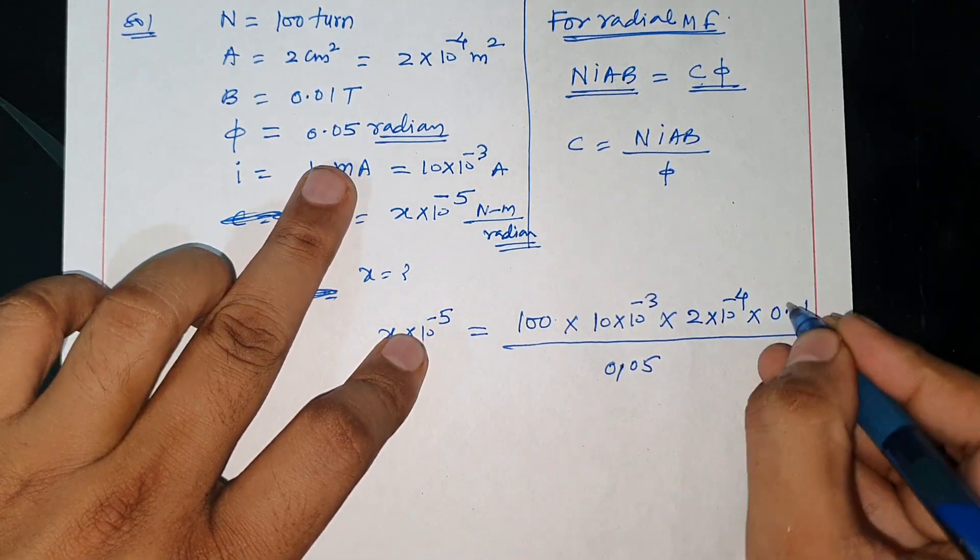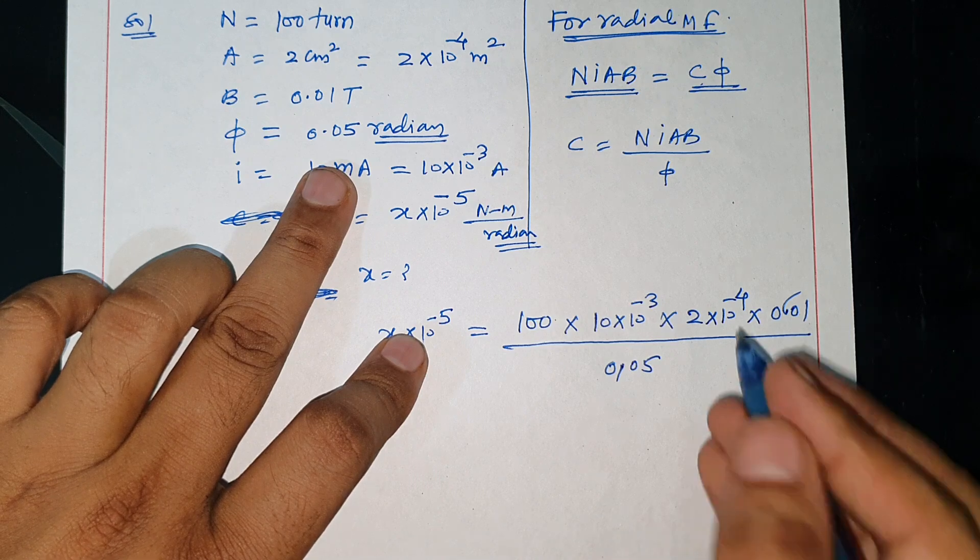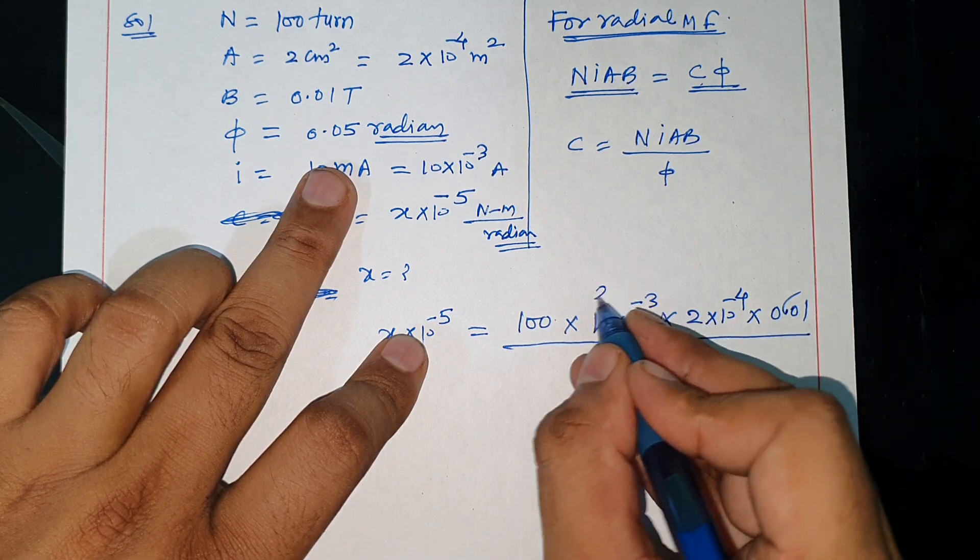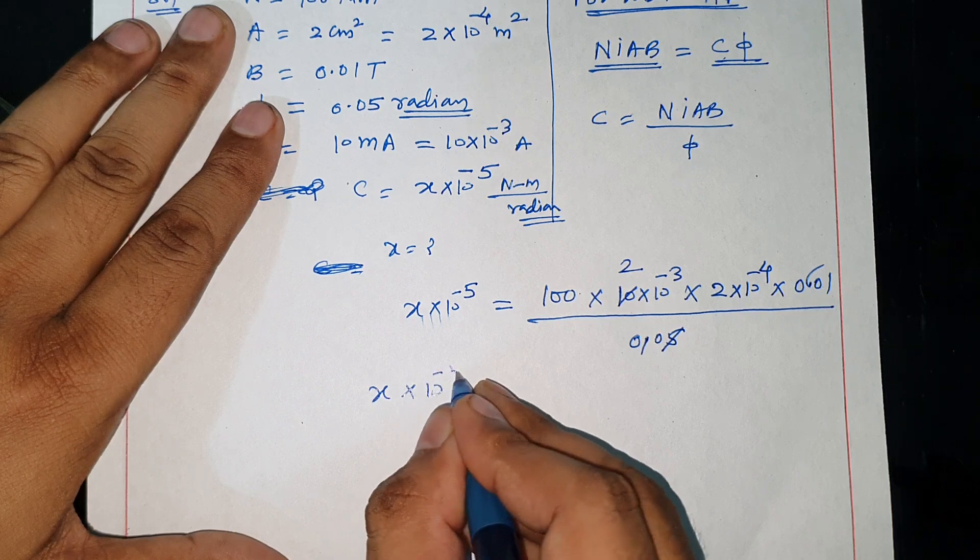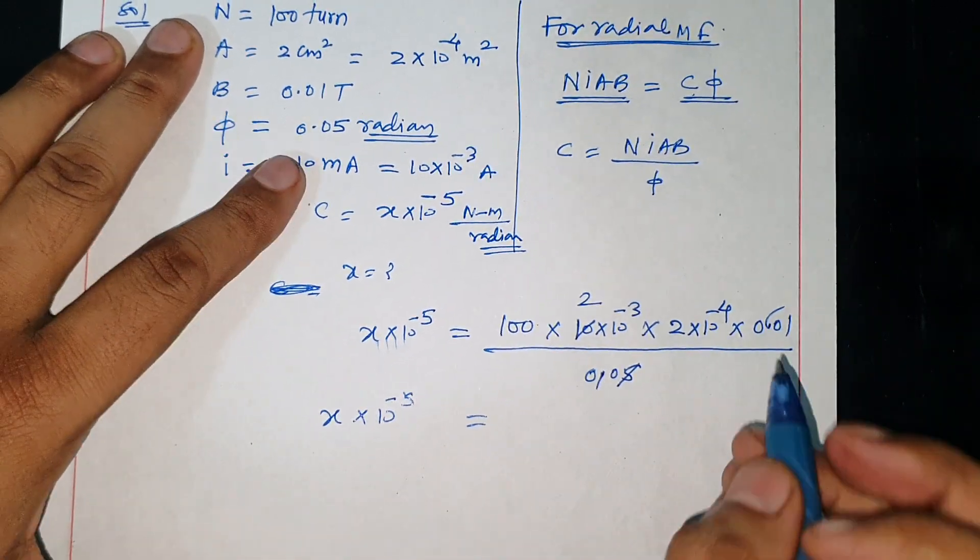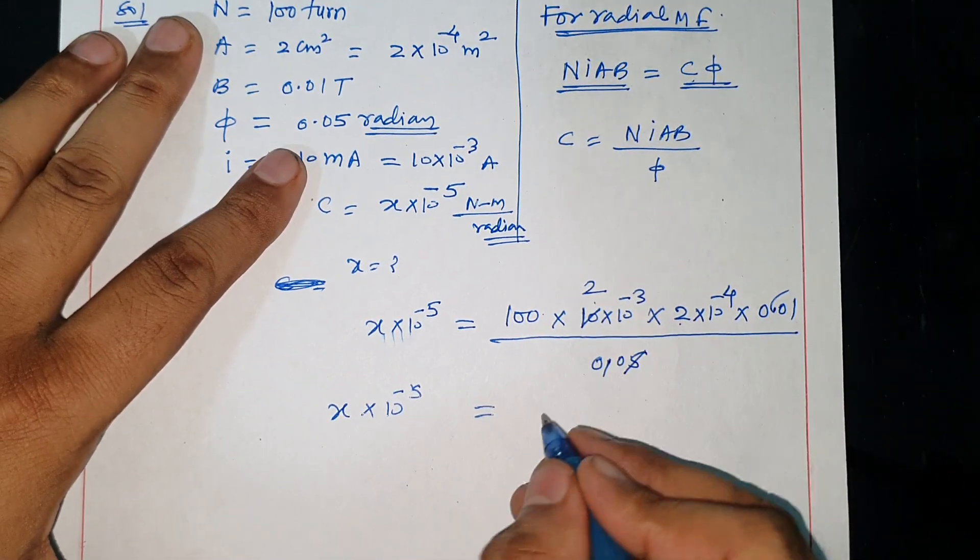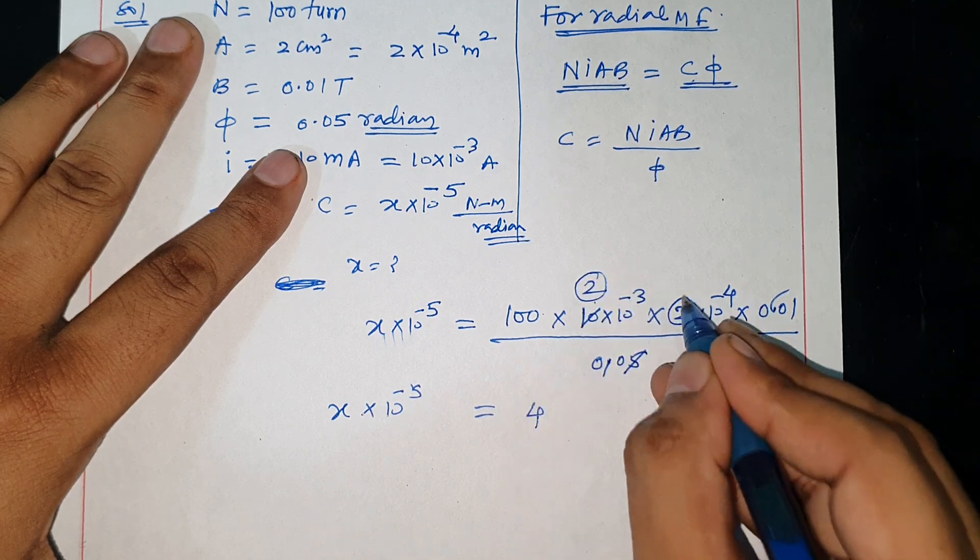Phi value is 0.05. So from this, this cancels. Phi cancels, giving 2. This becomes x equal to 10 power minus 5. Now look, 2 and 2 makes 4. First let's write these - 2 and this 2 makes 4.